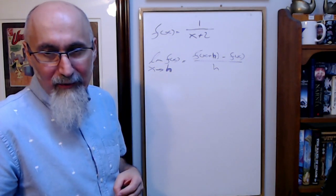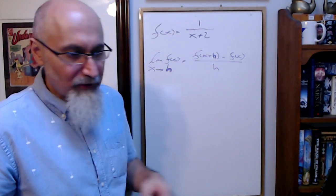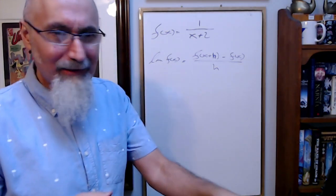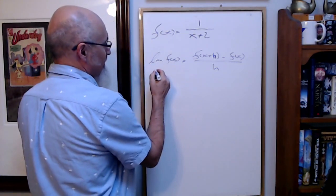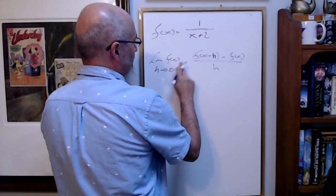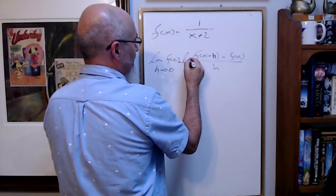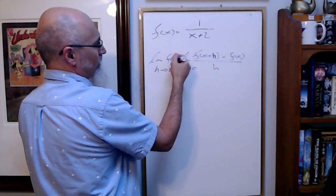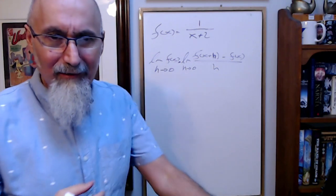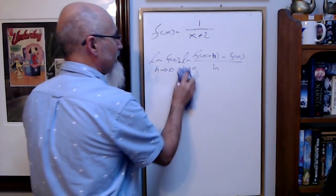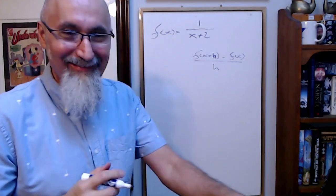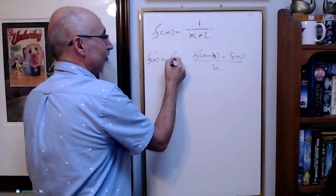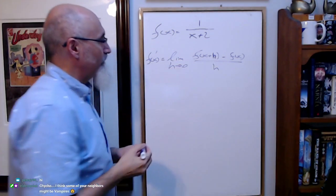We do — I think it should be limit as h approaches zero. That's right, thanks. So this is: the limit as h approaches zero, and this equals — the limit as h approaches zero — and this is the derivative. F of x prime, the derivative, is the limit as h approaches zero.